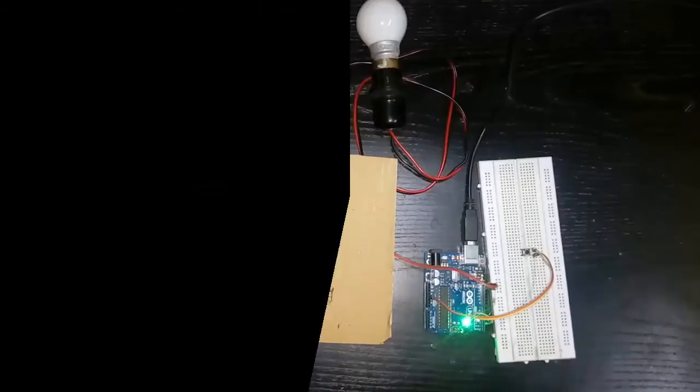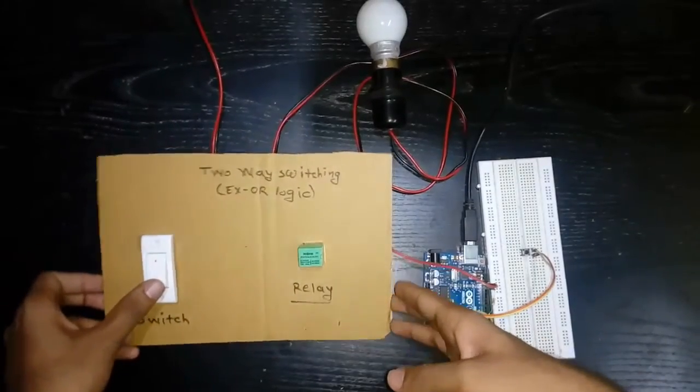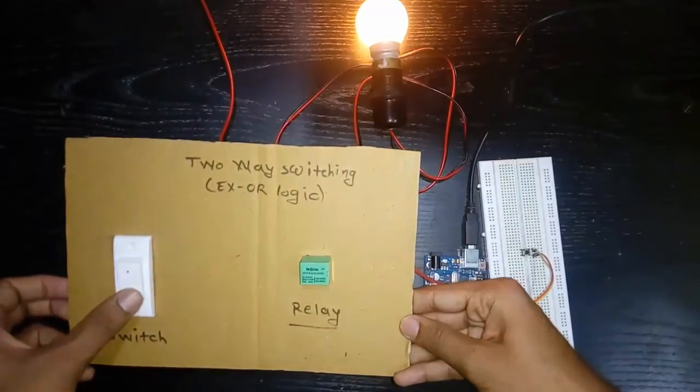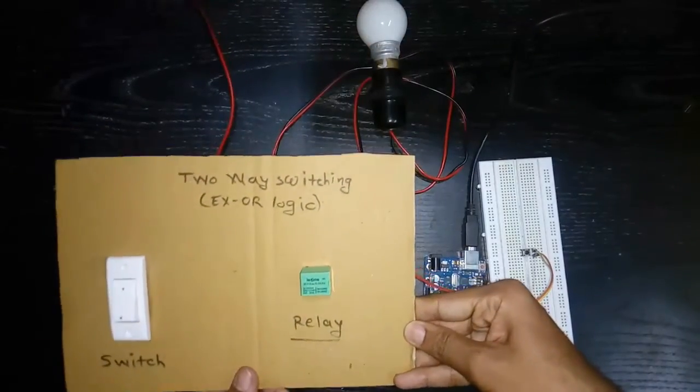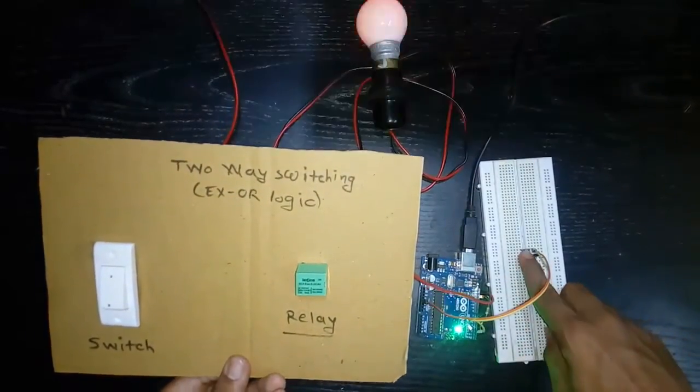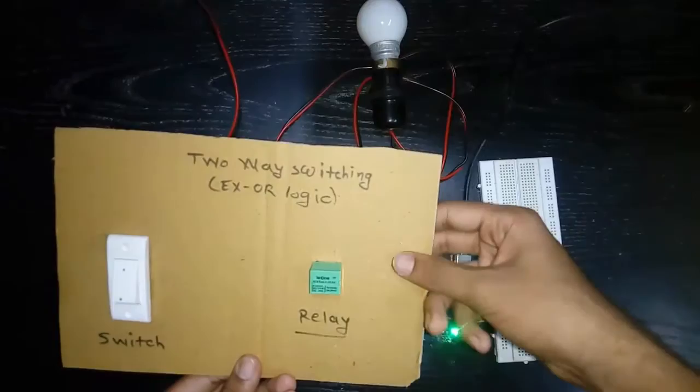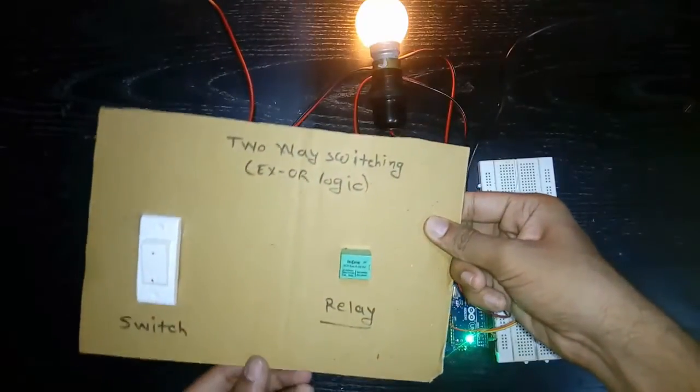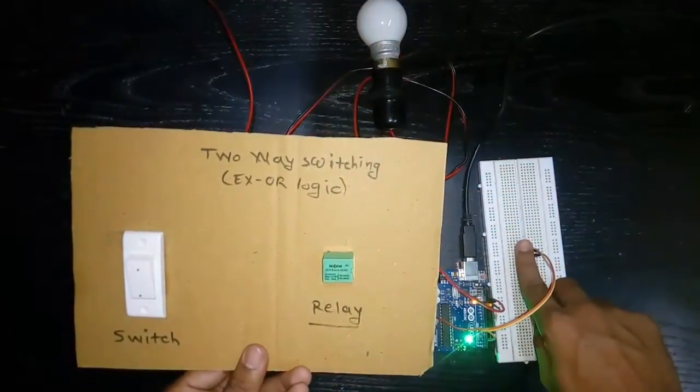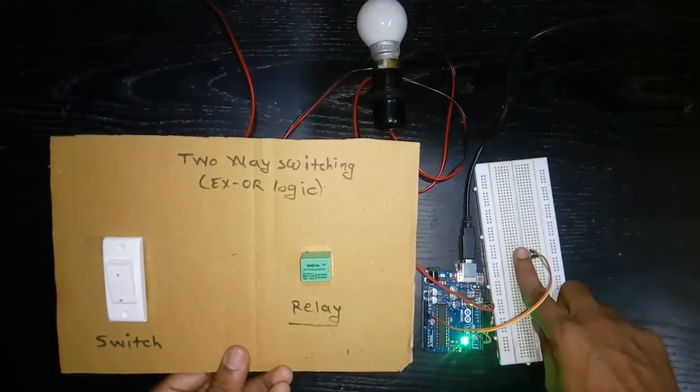Now performing XOR logic. One switch is connected with a relay, and the relay is connected to Arduino. When switch 1 is on, the bulb is on. When the relay is on, the bulb is on. When both the switch and relay are on, the bulb is off.